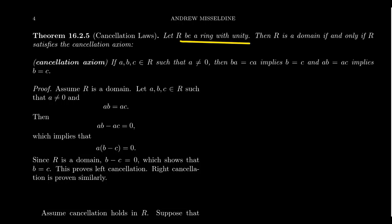That is to say, R is a ring with unity. Then R is a domain if and only if it satisfies the cancellation axioms, both left and right cancellation.